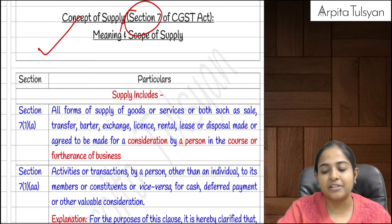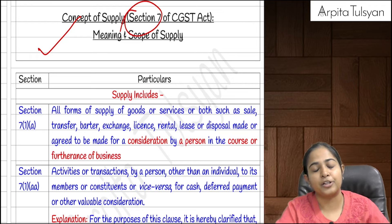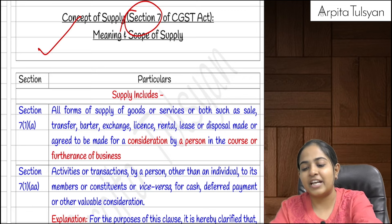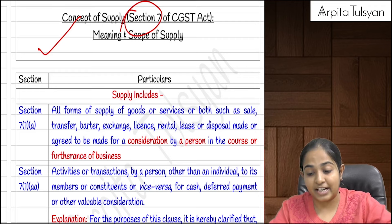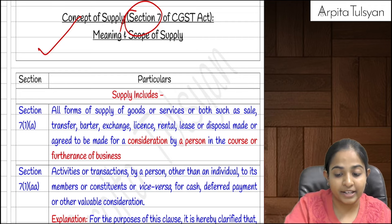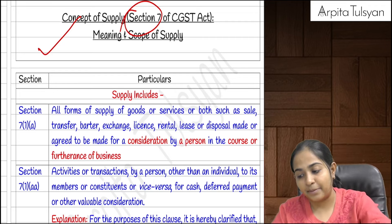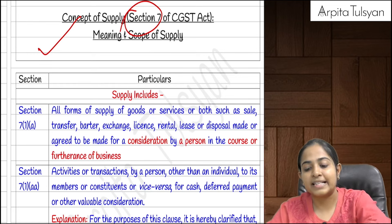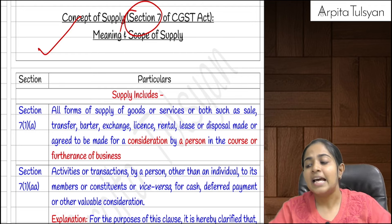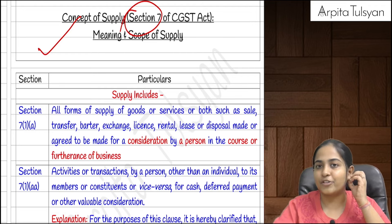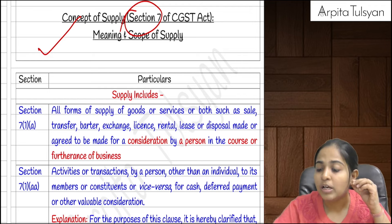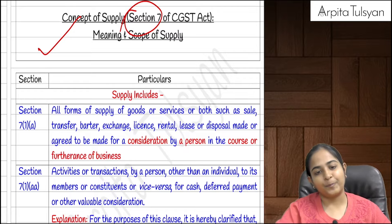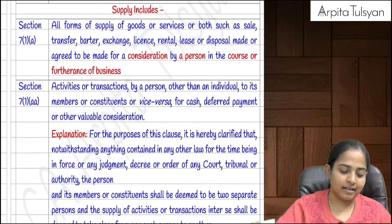Whenever I refer to section 7 in this chapter, it refers to the CGST Act. Regarding interstate transactions — whatever provisions we are studying in relation to supply under section 7 of the CGST Act, the same provisions have been made applicable to interstate supply as well, so it has been made applicable to the IGST Act also.